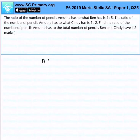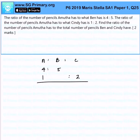So Amuta to Ben to Cindy — Amuta to Ben is 4 to 5, and Amuta to Cindy is 1 to 2. If we want to write the ratio in a straight line from Amuta to Ben to Cindy, what we have to do is multiply the bottom ratio by 4.